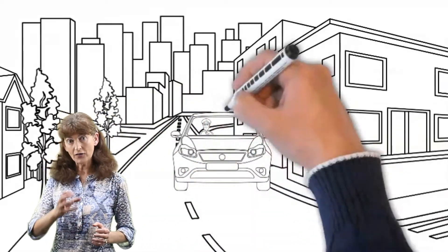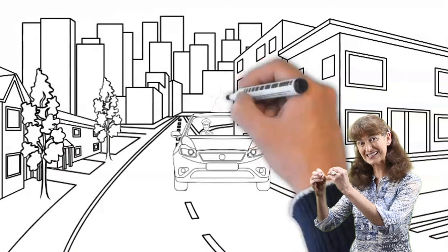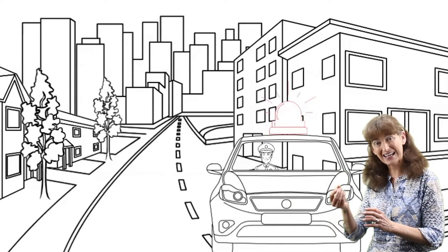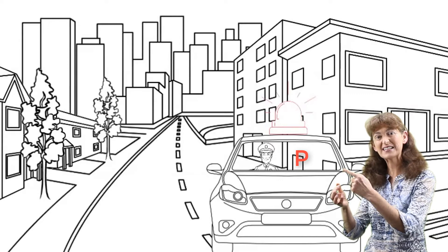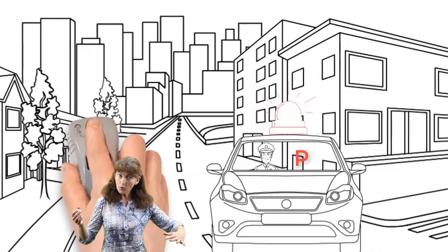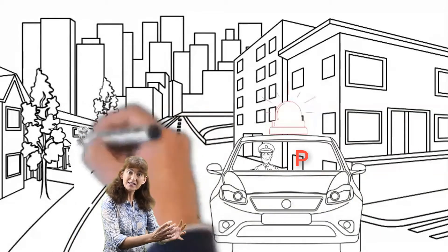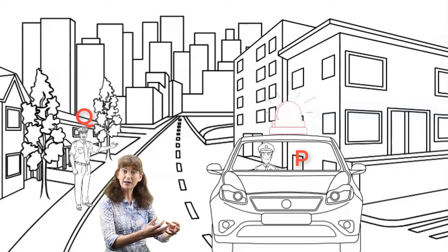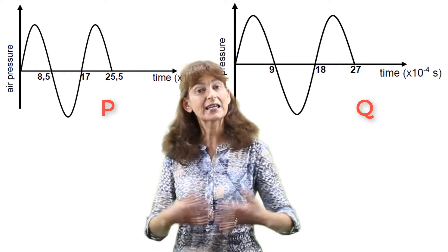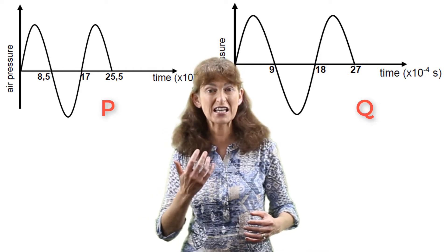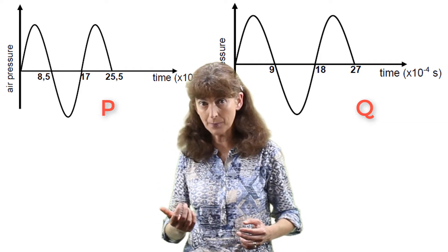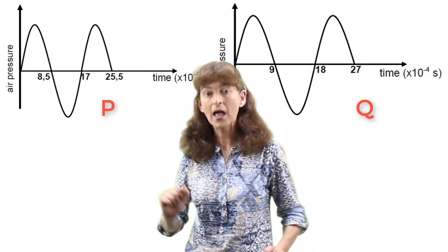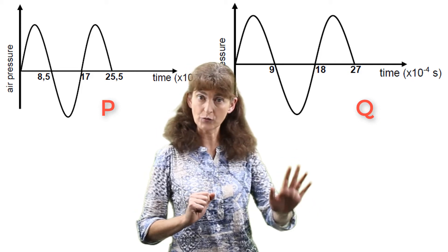We're told that a police car moving at constant velocity has a siren giving off sound. Inside the police car, we have a detector P detecting the sound made by the siren. Meanwhile, on the road nearby, we have another detector Q that's stationary and is also measuring the sound from the siren. Then we're given graphs of the air pressure changes over time, measured by P inside the police car right next to the siren, and Q, which is stationary on the road.